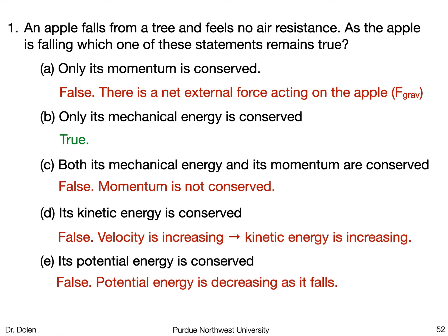The energy of the apple is conserved — it starts off as potential energy and that turns into kinetic energy as it falls, transferring from one type to another while the total remains constant. C is false because A is false. D is false — kinetic energy is not conserved; it starts at zero and increases as the apple falls and its velocity increases. E is also false — potential energy is decreasing as the apple falls, since potential energy depends on height, and as height decreases, potential energy decreases.